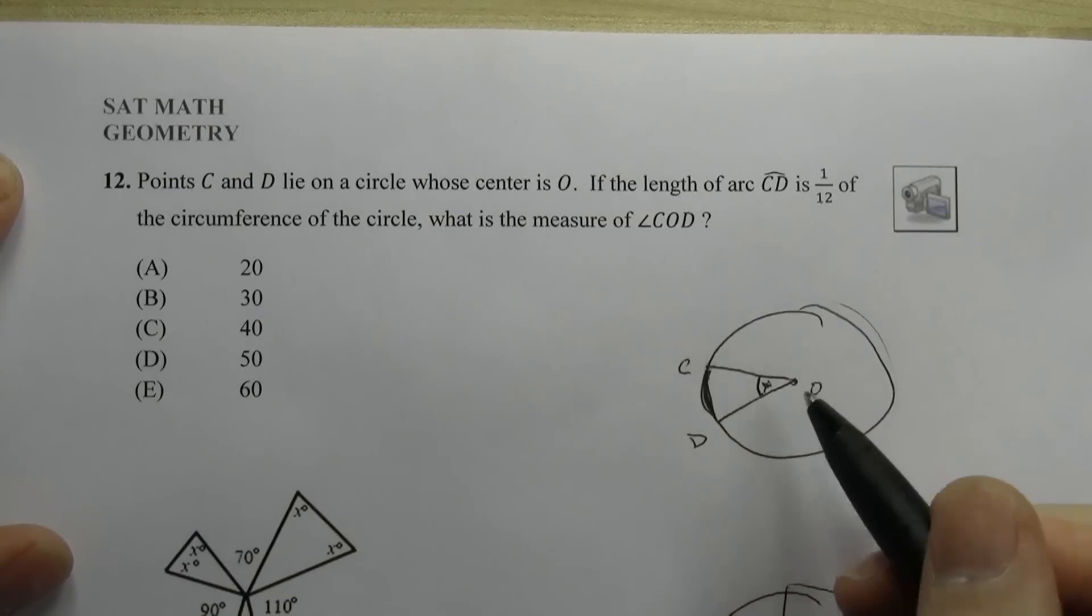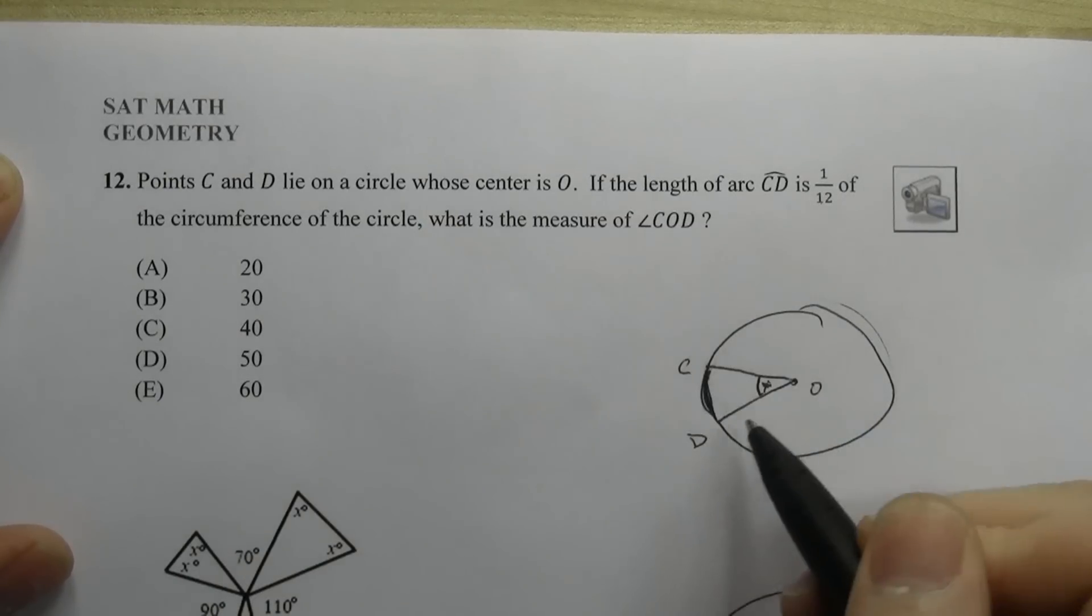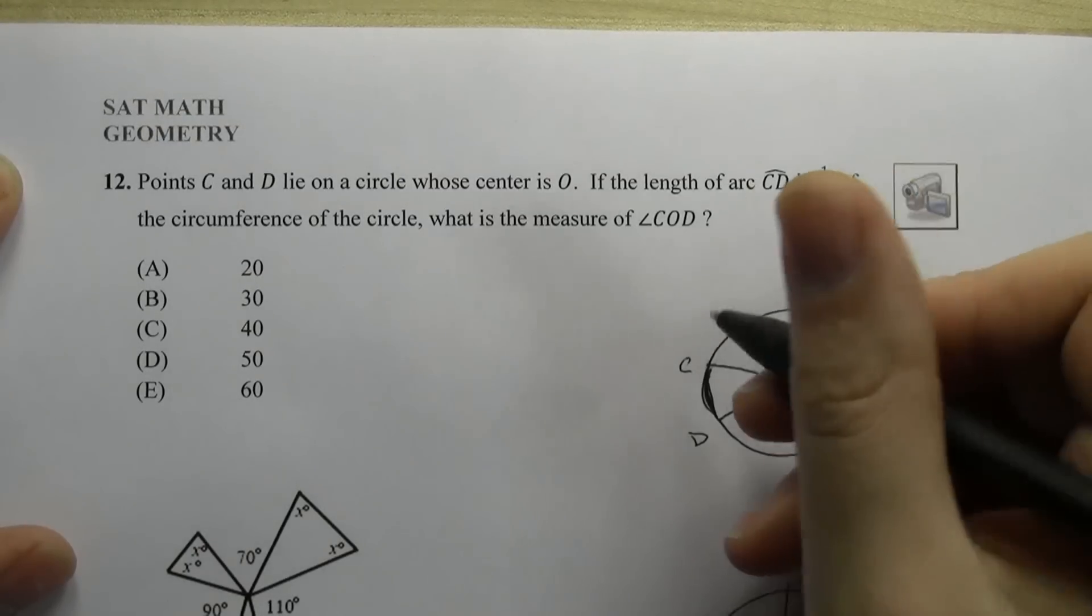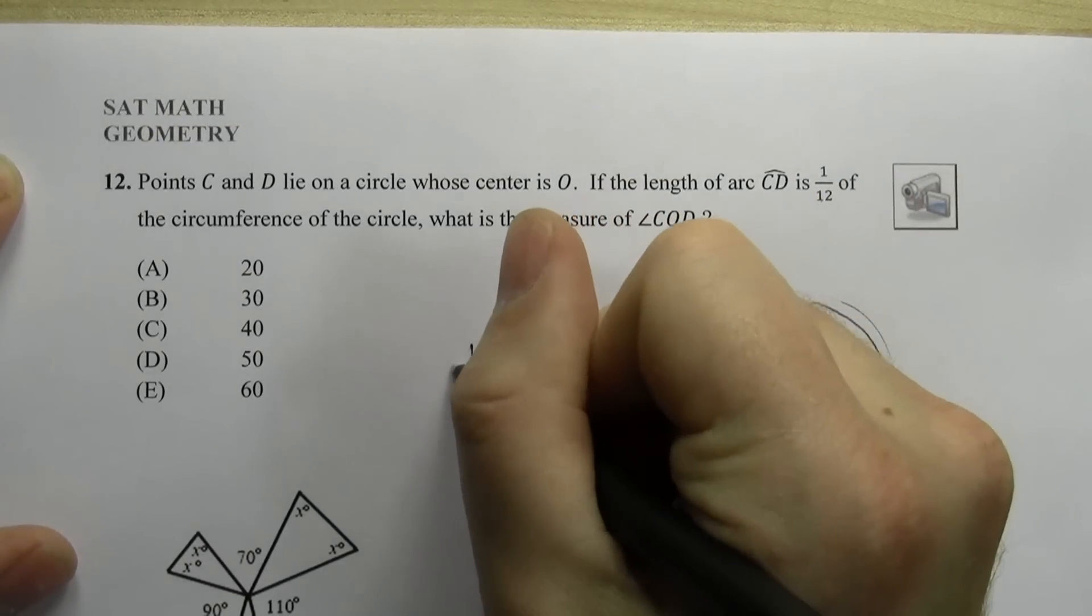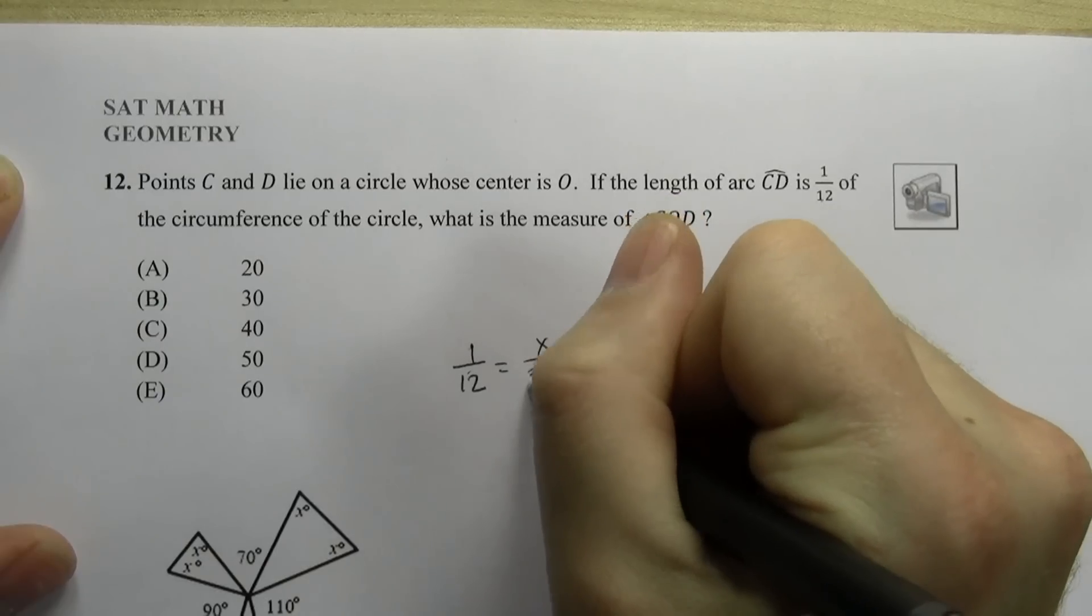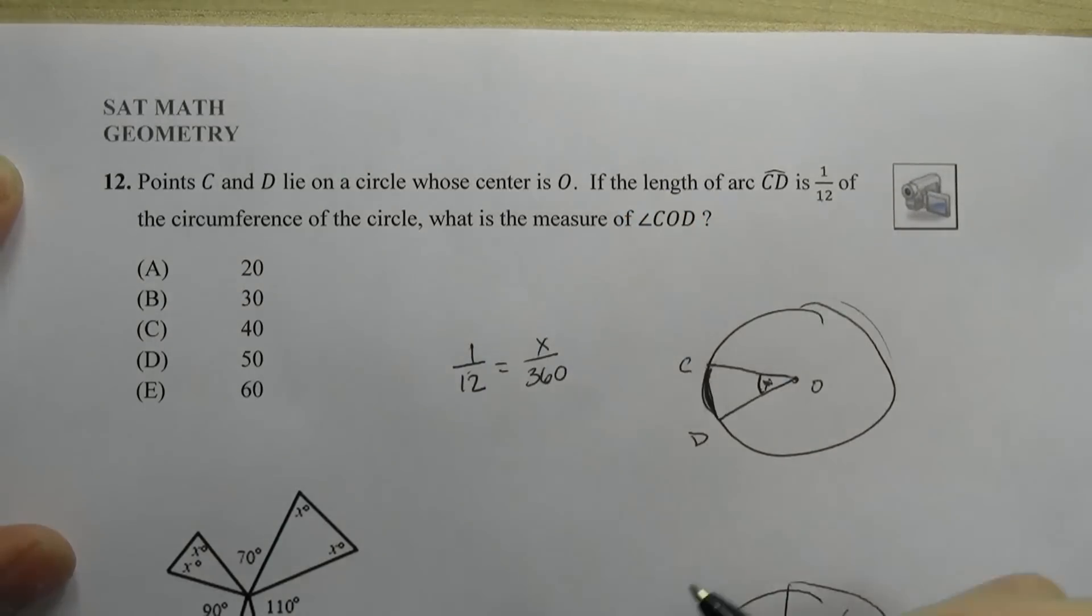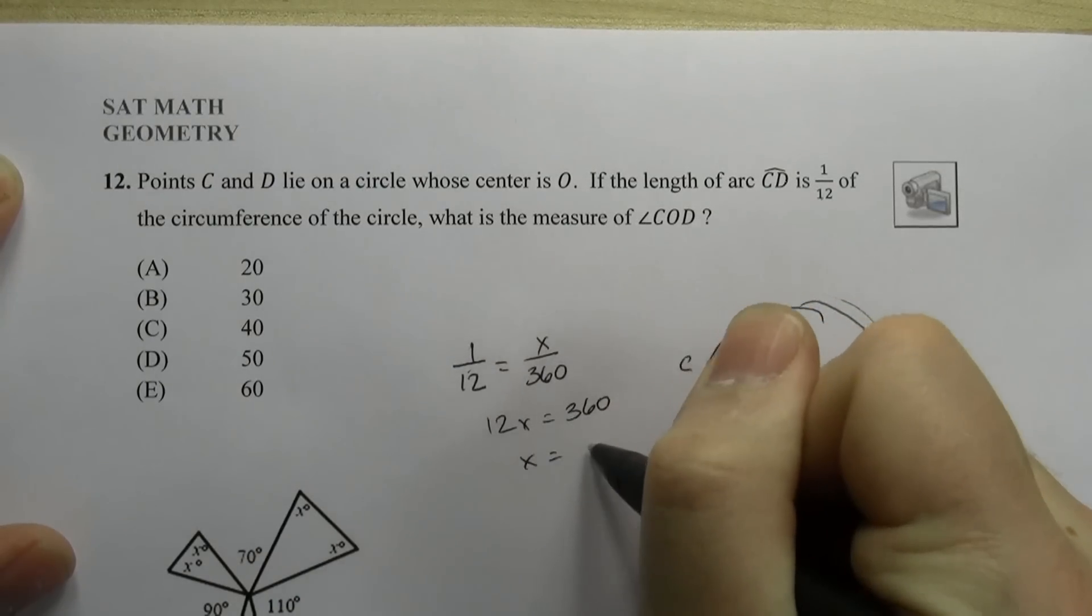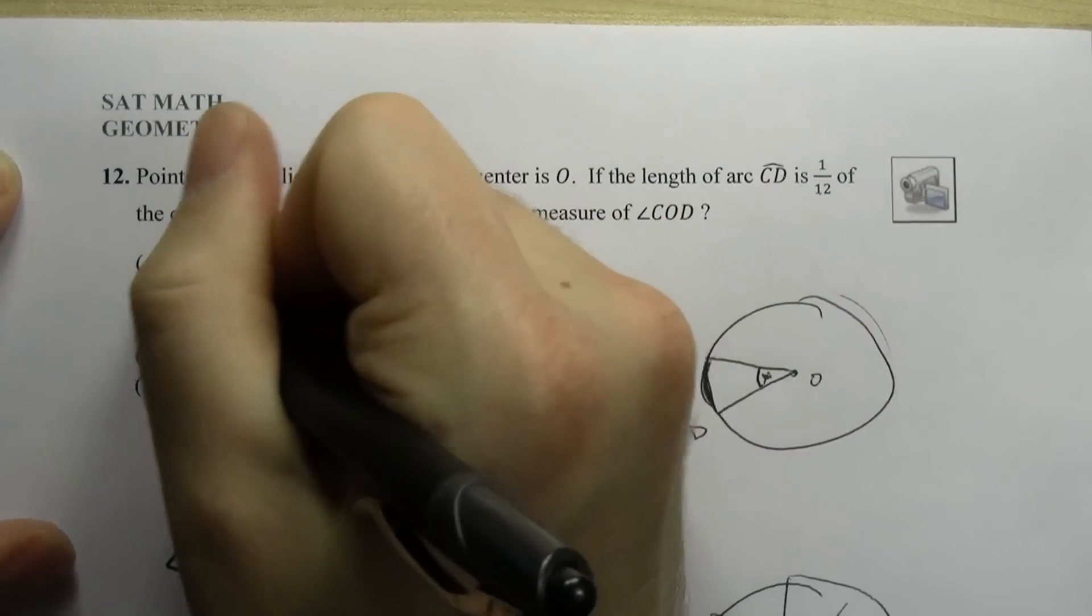So it's the same concept here. If this is one twelfth of the entire circumference, then everything else is one twelfth. So in this case, we know that 1/12 is going to equal X/360. It's a proportion we'd like to set up. 12X equals 360, X equals 30, and that's it. We're done.